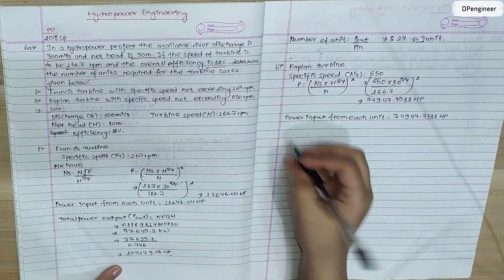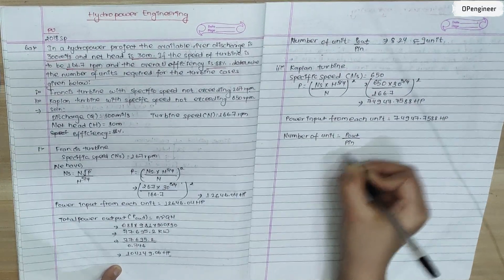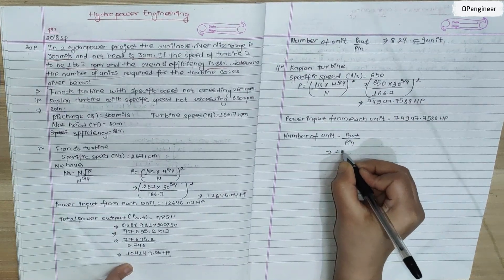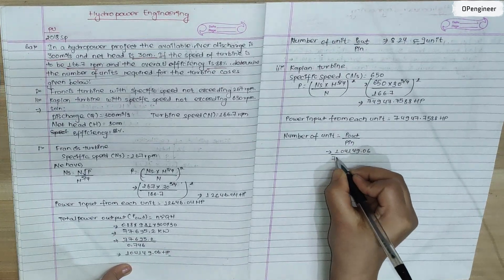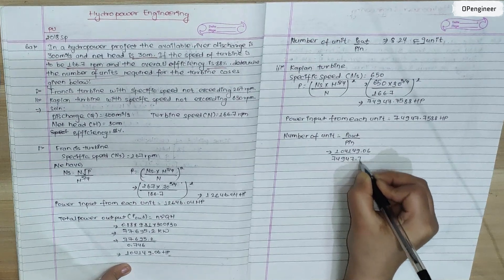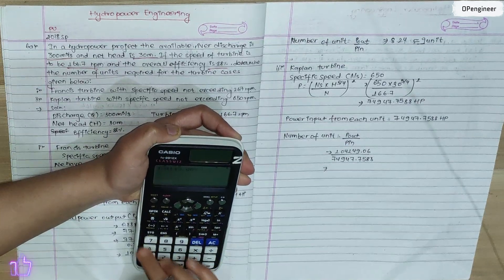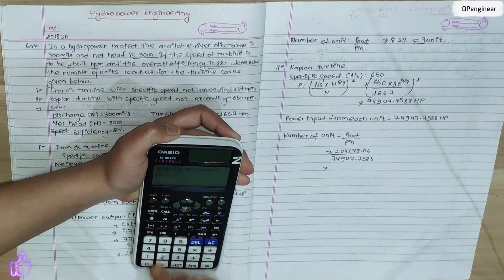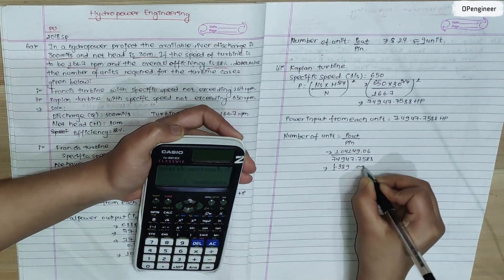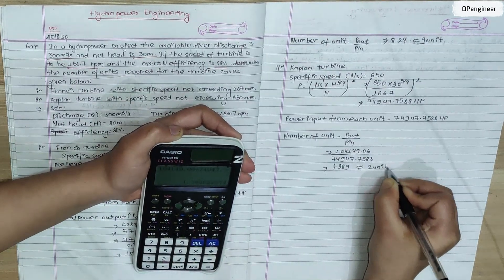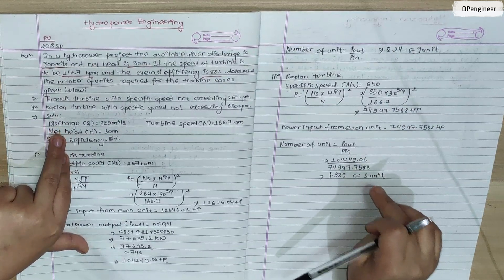Number of units for Kaplan turbine: 104149.06 divided by 74947.7588 equals 1.389. This is nearly equal to 2 units. So number of units for Francis is 9 units and for Kaplan is 2 units.